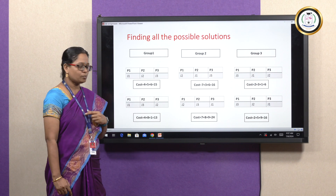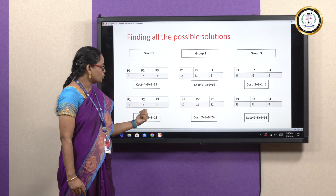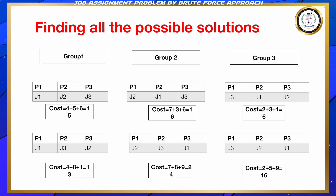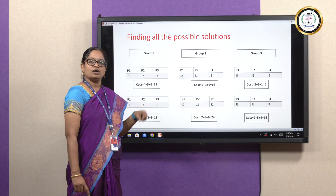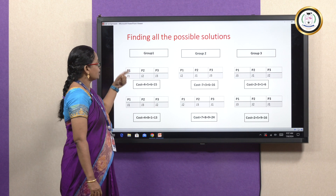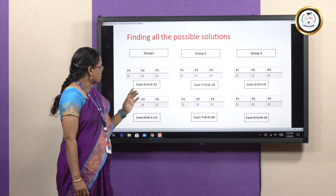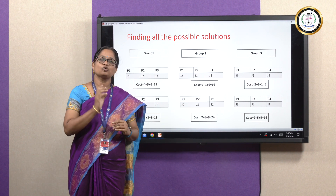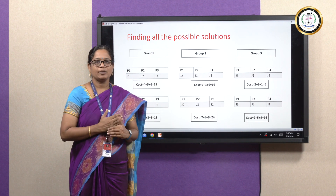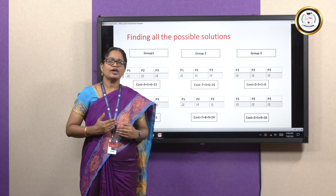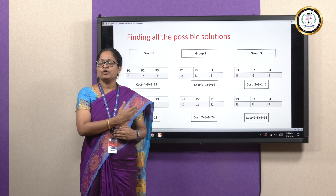Similarly, job 1 is assigned to person 1, job 3 is assigned to person 2, and job 2 is assigned to person 3. You can notice that J1 is fixed — that is, job 1 is assigned to person 1 — and only the other two columns are changed. That is, J2 is assigned to P2 in the first case and J3 is assigned to P2 in the second. Job 1 is always fixed to person 1 in group 1. Here we are splitting into 3 groups, since we have taken 3 persons and 3 jobs. If we take 4 persons and 4 jobs, we would split into 4 different groups.